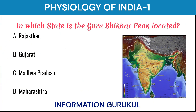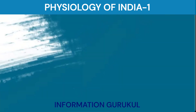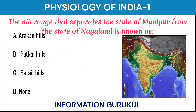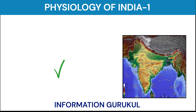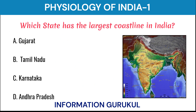In which state is the Gurushikhar Peak located? Rajasthan. The hill range that separates the state of Manipur from the state of Nagaland is known as the Barail Hills. Which state has the largest coastline in India? Gujarat.